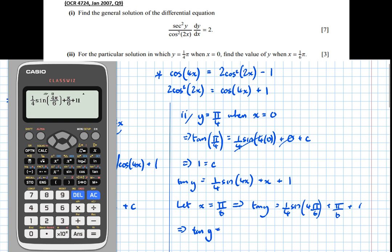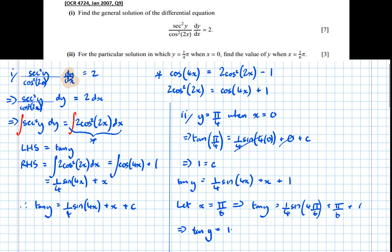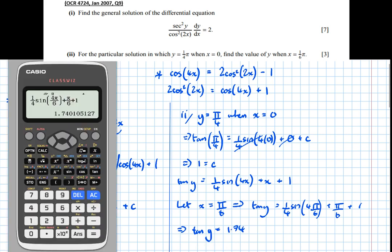Notice the question hasn't asked us for an exact answer, therefore rounding is okay here. Typically three significant figures is what's acceptable. So tan y equals 1.740105.